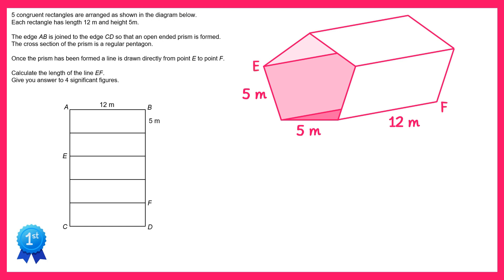In order to find the length EF, we're going to start by drawing a line from E to this point here, which we'll call G. Now since this pentagon is a regular pentagon we know all of the interior angles — they're all 108 degrees — so we could mark on this angle here as 108 degrees.